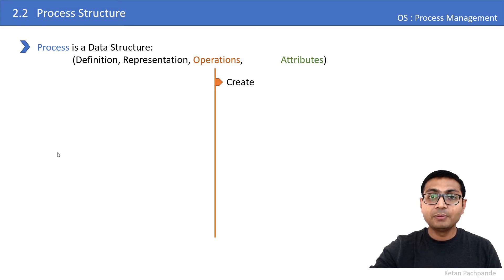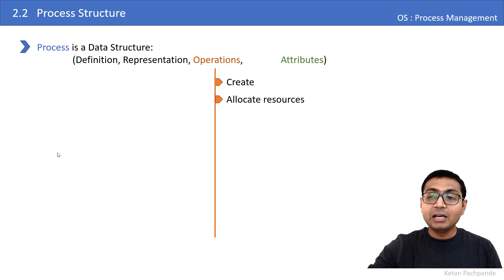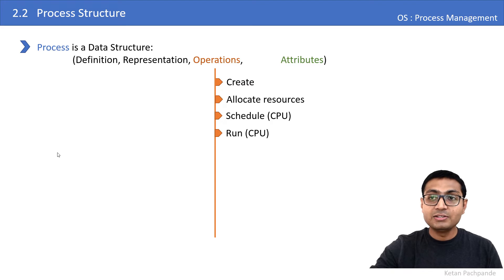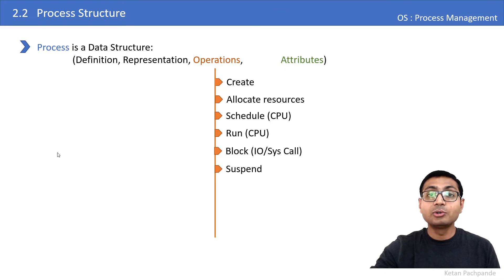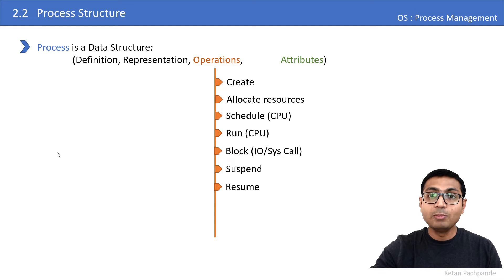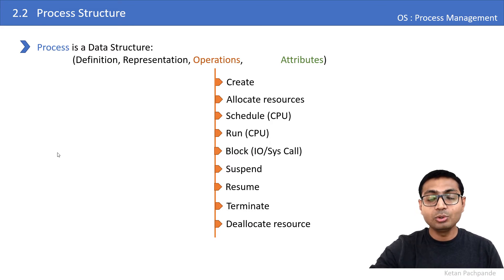The first operation of the process is create — whenever a user converts a program into a process the OS invokes the create process internal function and starts creating the process in memory, allocating resources to it. Once it is ready it schedules the process to the CPU, which executes it. Other operations include: block the process for IO or any system call; suspend — when memory is full, processes are shifted to secondary disk; the opposite operation resume; and finally terminate — after terminating a process the OS needs to de-allocate the resources allocated for that process.